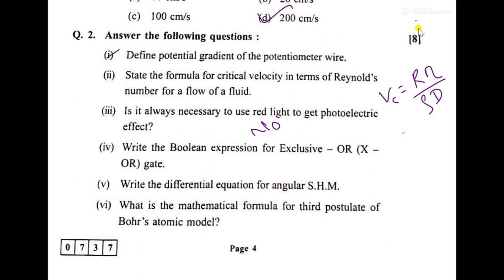Then write the Boolean expression for exclusive OR, so Y is equal to A or B plus and then the round circle.